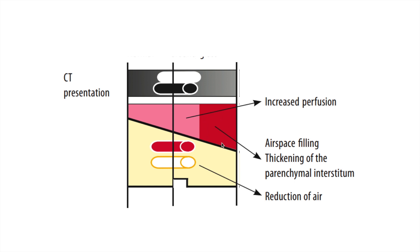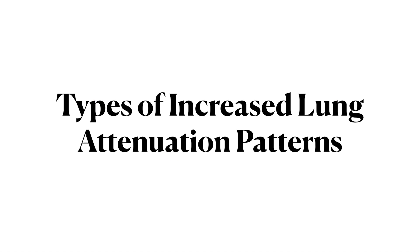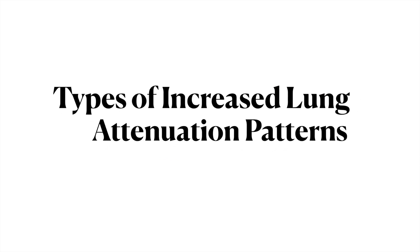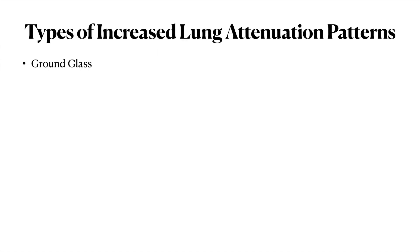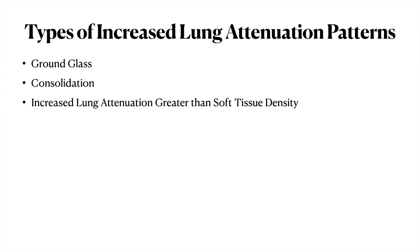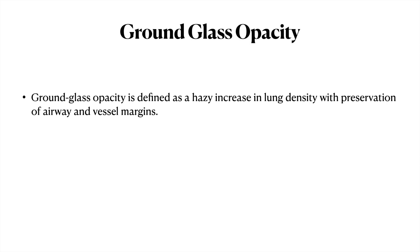There are three types of increased lung attenuation patterns. These are: first, ground glass opacity; second, consolidation; and third, increased lung attenuation greater than soft tissue density. We'll cover these one by one, beginning with ground glass opacity.